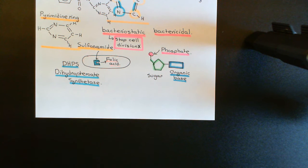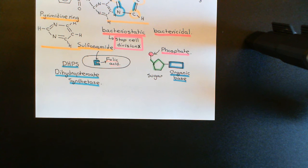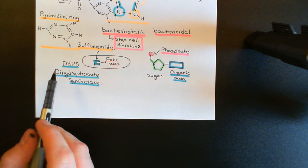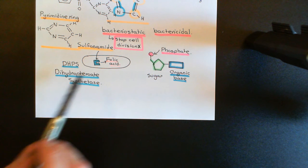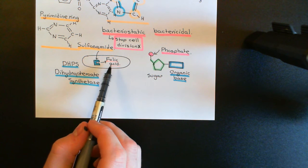Welcome back to this next video in which we are discussing folate antagonist antibiotics. In the previous video, what we discussed is the sulfonamide antibiotics and how they work. The sulfonamides work by inhibiting the enzyme dihydropteroate synthase inside bacterial cells, and this enzyme is important in the biosynthetic pathways for folic acid.